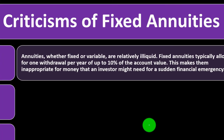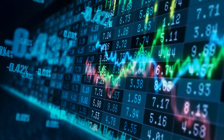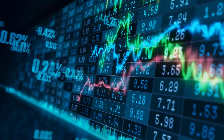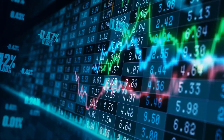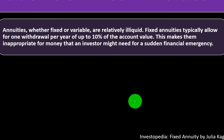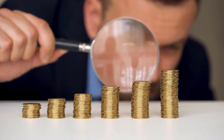Criticisms of fixed annuities: annuities, whether fixed or variable, are relatively illiquid. If you put money into other kinds of investments like stocks and bonds, you can typically access the principal more easily. Fixed annuities typically allow for one withdrawal per year up to 10 percent of the account value. This makes them inappropriate for money that an investor might need for a sudden financial emergency, since the whole point is that you're guaranteeing the insurance company access to the funds.